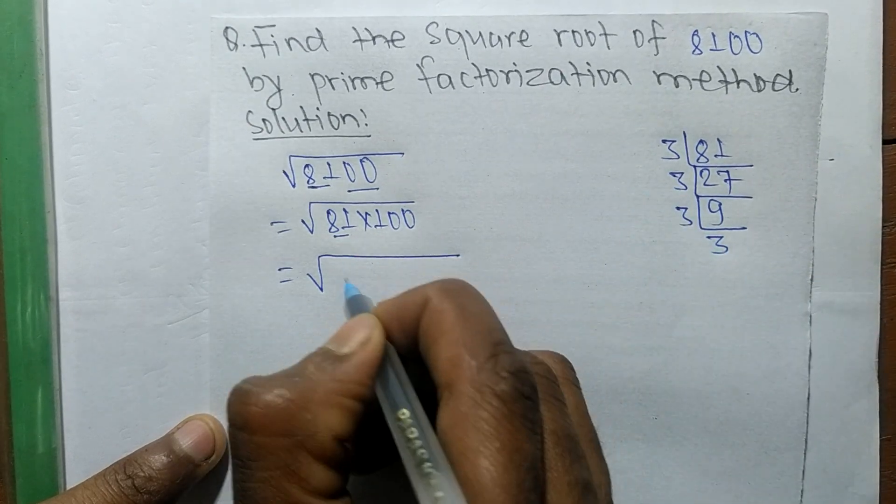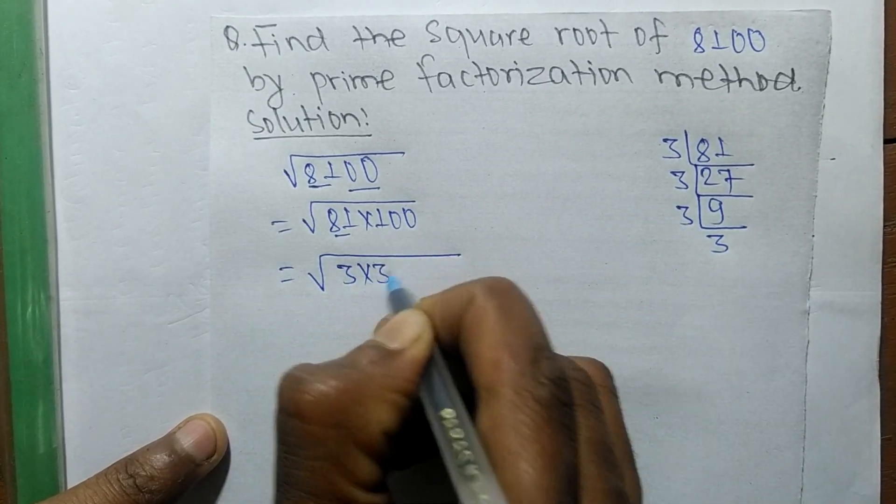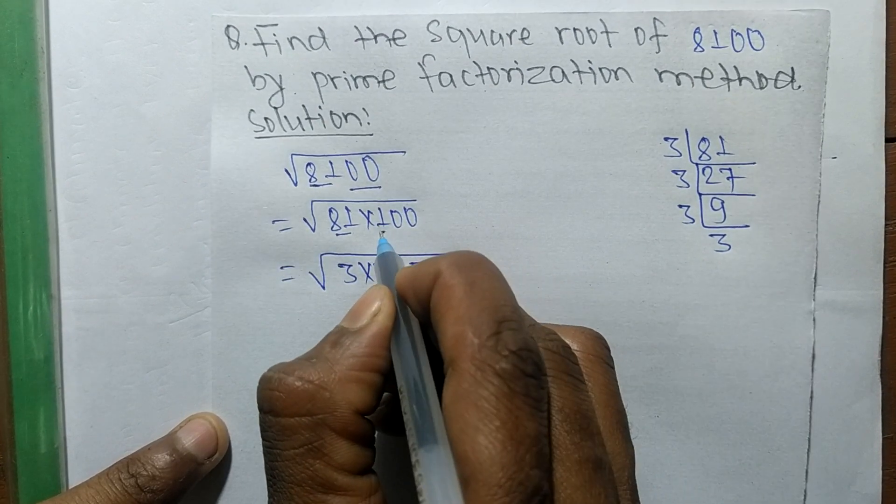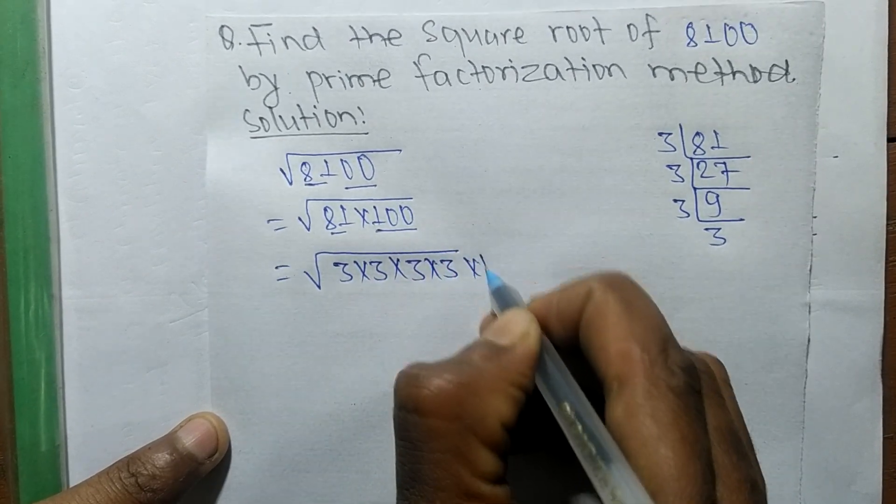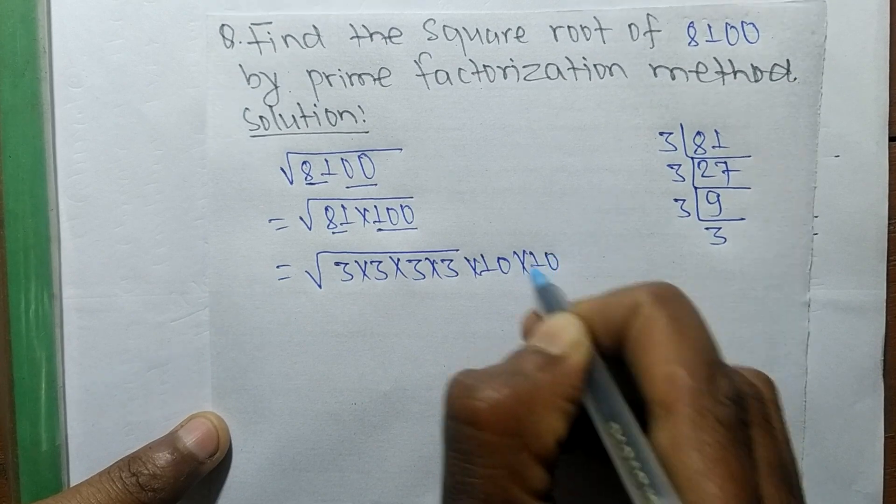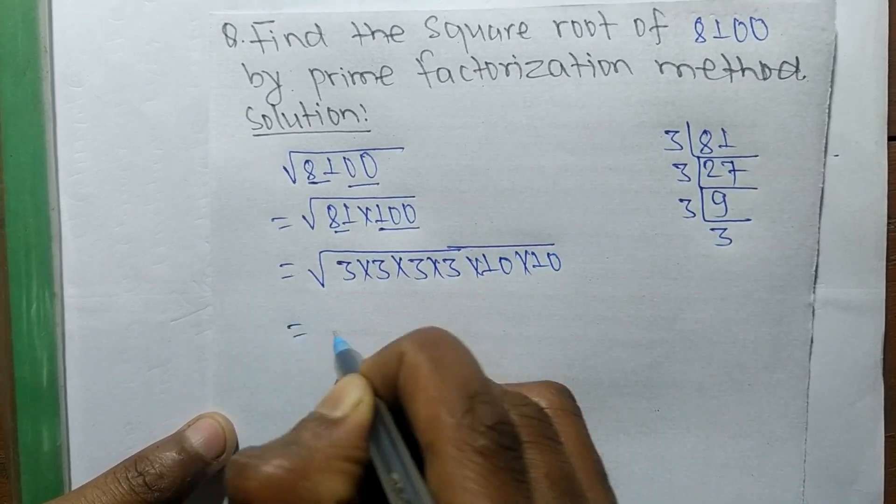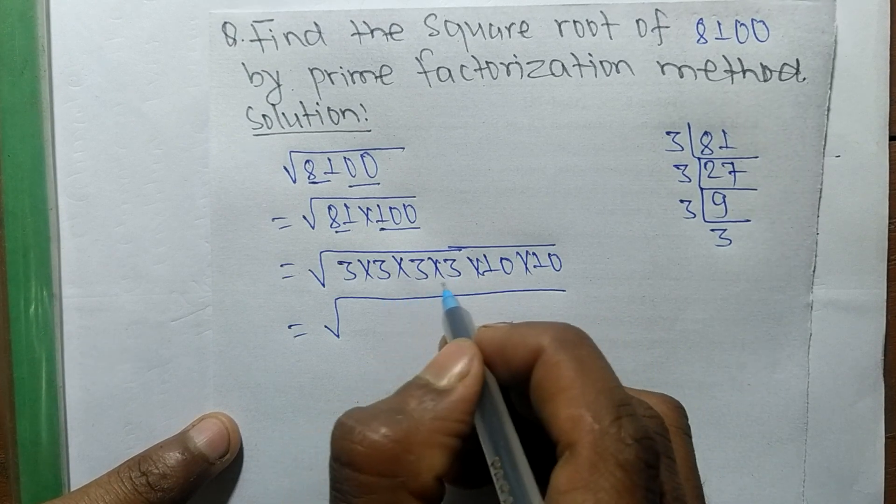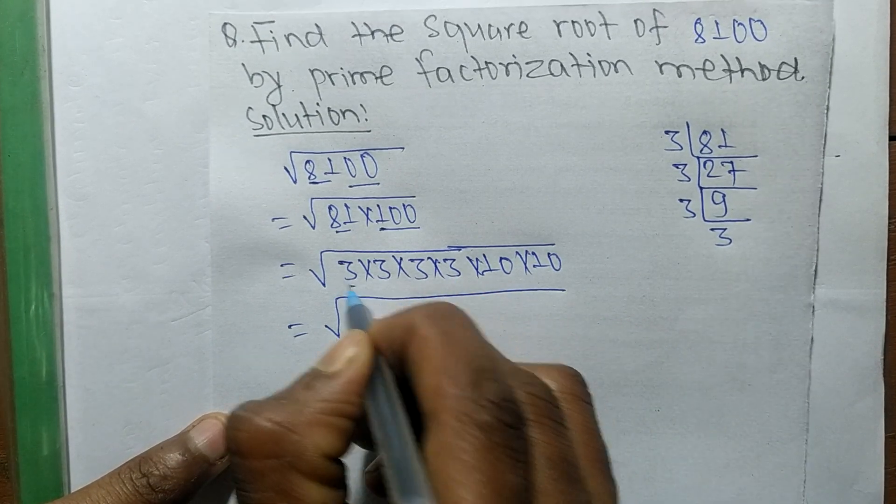We can write 3 times 3, and the remaining part 100 means it is 10 times 10. Now from all these numbers we make squares from these numbers.